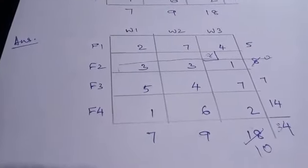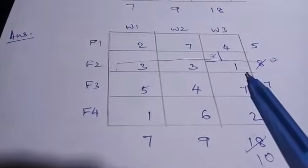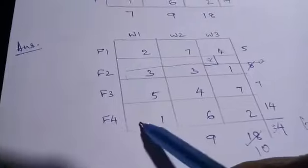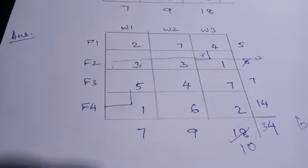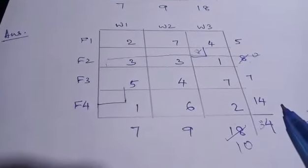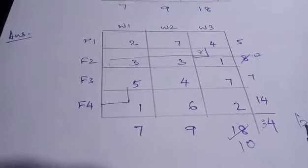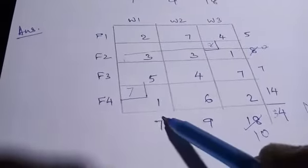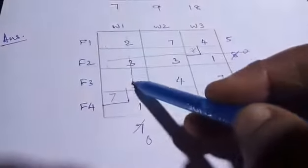Now we check the next least value. There are two ones present in the table; we take the first one we encounter. For that cell, the demand is 7 and the supply is 14, so we take the lesser value, which is 7. This becomes 0, the supply becomes 7, and we remove that column.